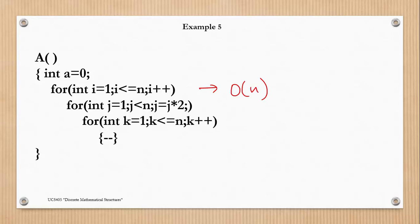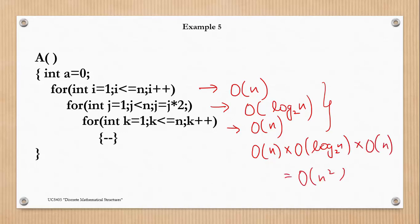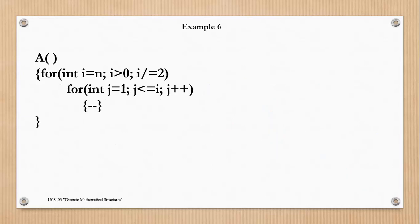Next example: we have an outer loop running for n times, so its complexity is O(n). The second loop runs from 1 to n with j multiplied by 2 each time, which is similar to Example 3, giving complexity O(log n base 2). The third k-loop runs from 1 to n, so its complexity is O(n). These are nested loops, so the total time complexity is O(n) × O(log n base 2) × O(n) = O(n² log n base 2).